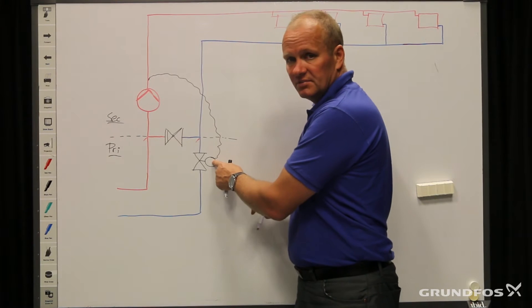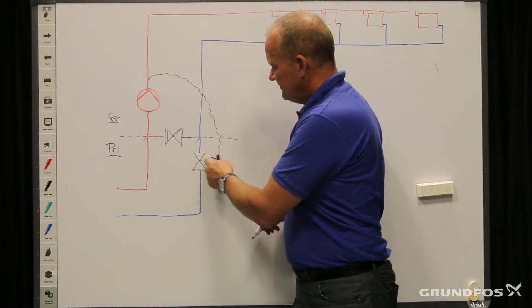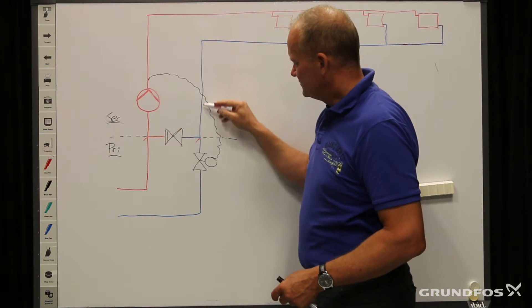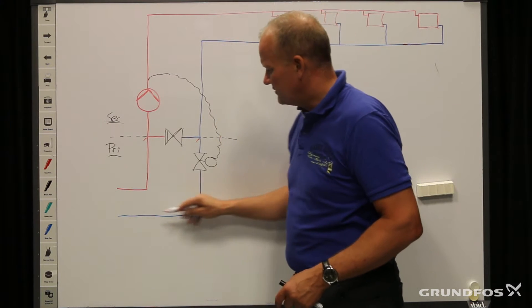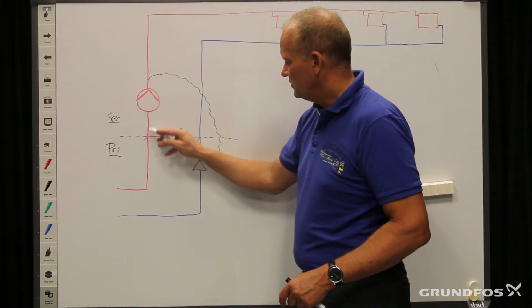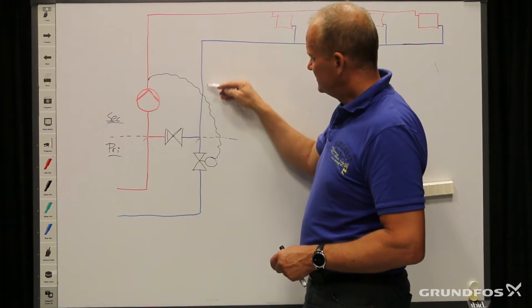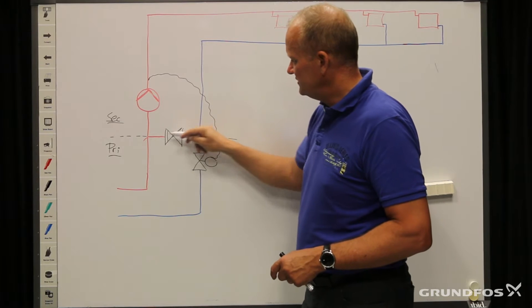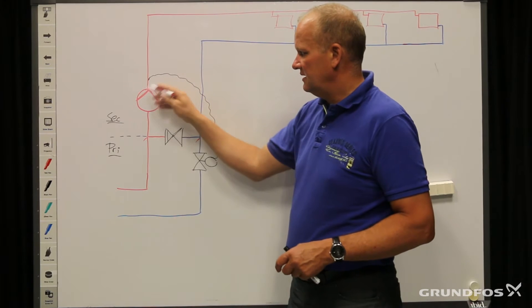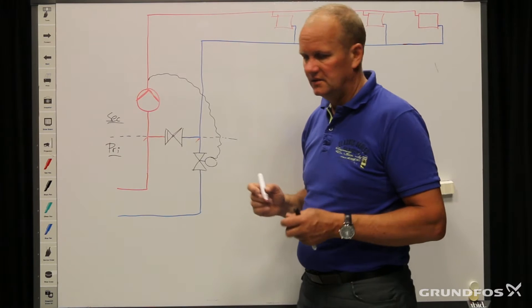The motorized valve is placed on the primary side. When this valve is opening and closing — if it's opening, it allows the return water from the system to go directly back to the main source, and then fresh hot water can be let into the system. But if it's closed, then the water coming back from the system is recirculated all the time out in the system, thereby adjusting the flow temperature to the level which is currently needed.